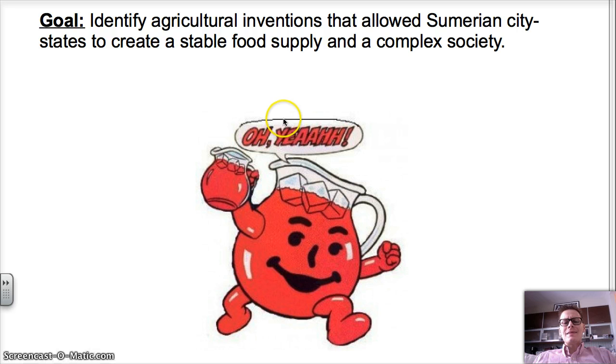So what did they need to do? They needed to come up with a way to turn the fields. They needed to come up with a plow. And that's what we're going to discuss. We're going to discuss the plow that helped them mix up the Kool-Aid and the irrigation system that helped them supply the water to the Kool-Aid.